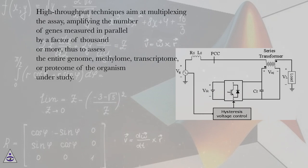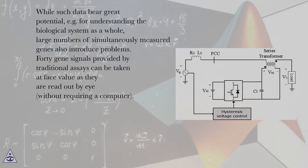High throughput techniques aim at multiplexing the assay, amplifying the number of genes measured in parallel by a factor of thousand or more, thus to assess the entire genome, methylome, transcriptome, or proteome of the organism under study. While such data bear great potential, for example for understanding the biological system as a whole, large numbers of simultaneously measured genes also introduce problems.